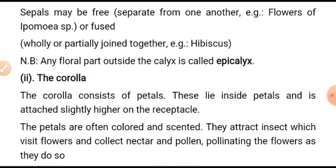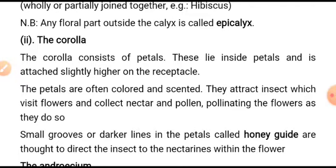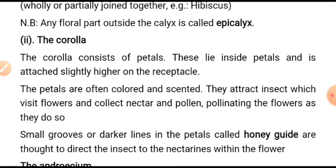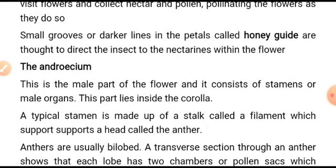The calyx is the collection of sepals, whereas the corolla is the collection of petals. The petals lie inside the sepals and are attached slightly higher on the receptacle. The petals are often colored and scented; they attract insects with these features, collect nectar, and facilitate pollination as the insects visit the flower.